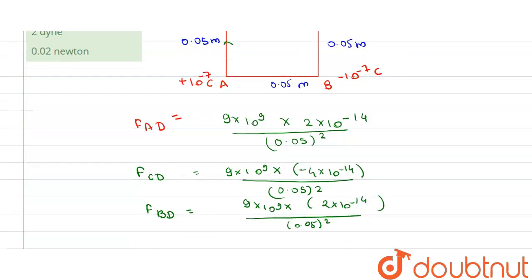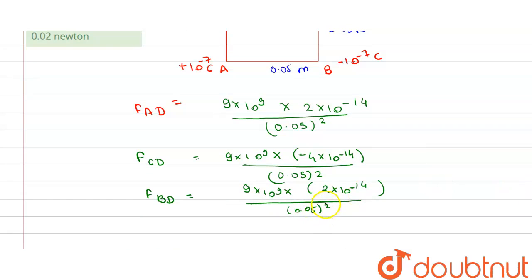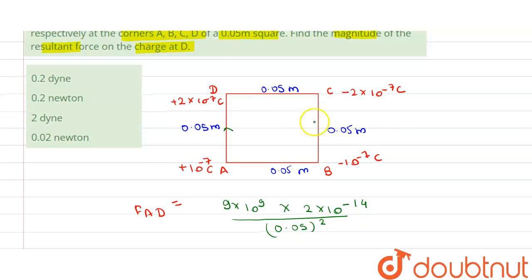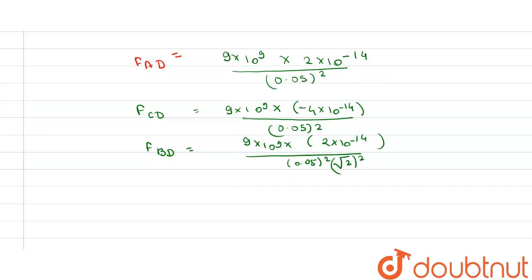And sorry, distance will be 0.05 times √2 squared, because distance between B and D, this distance is 0.05√2. So this is the equation of force.